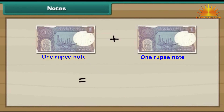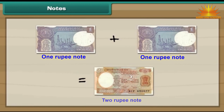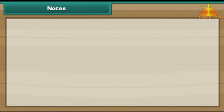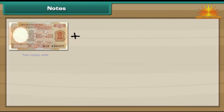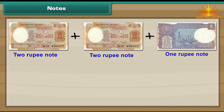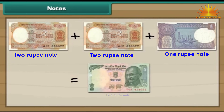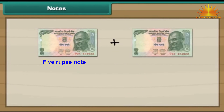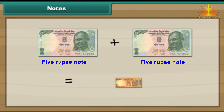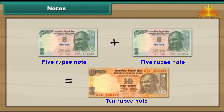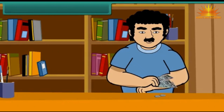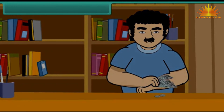2 one rupee notes make 2 rupees. 2 two rupee notes and 1 one rupee note make 5 rupees. 2 five rupee notes make 10 rupees. This is a 10 rupee note.